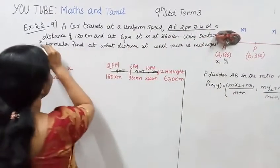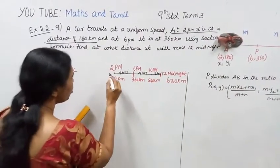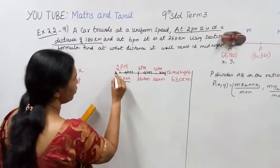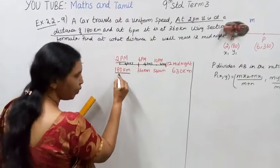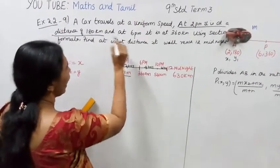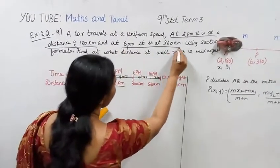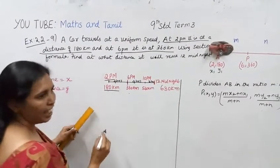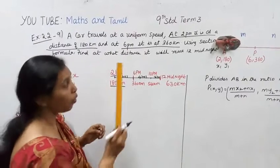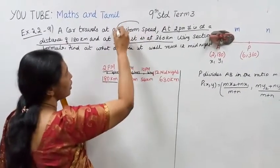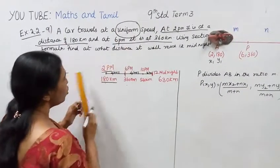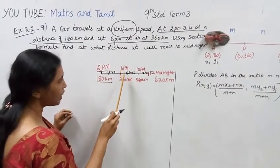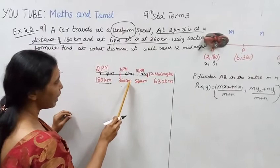So at 2pm the car is at 180 km. At 6pm the car is at 360 km. The car travels at uniform speed.